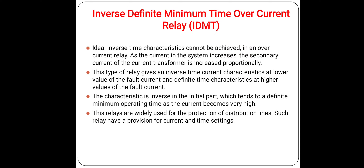The IDMT relay gives an inverse time-current characteristic at lower values of fault current and definite time characteristics at higher values of fault current. This type of relay shows both types of characteristics: inverse time characteristics at lower fault current values, and definite time characteristics at higher values of fault current.